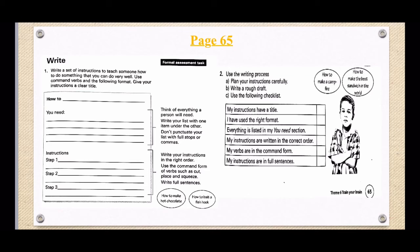So the first one says, my instructions have a title. And your title would be, like it says in the block, how to. Number two, and then you need to fill in whatever you're going to write about. That's your title. The next one on the checklist says, I have used the right format. The right format, like I said, is this block where it shows you everything that needs to be in the block that you need to put in your workbook. Number three on the checklist says, everything is listed in my you need section.